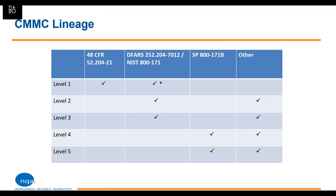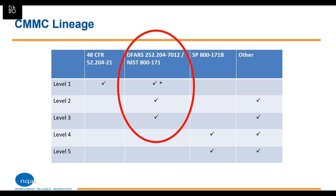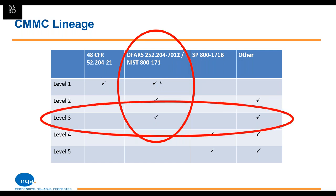In terms of the CMMC standard's lineage: the DFARS and NIST 800-171 that organizations might be familiar with largely maps to a CMMC level three status. There are about 20 other controls beyond the 110 coming out of NIST 800-171. Suffice to say that if you need to be compliant with NIST 800-171 today, you'll most likely need to be CMMC-certified level three in the future. And if you've done your due diligence and are meeting the controls in 800-171, you're well on your way to meeting CMMC level three.